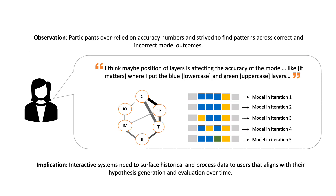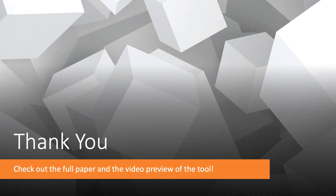Our observations also showed that participants over-relied on accuracy numbers and struggled to find patterns across correct and incorrect model outcomes. Participants' comments demonstrate that they often rebuilt models to retrieve information across transfers. For designers of interactive systems, it is crucial to surface historical and process data that aligns with their hypotheses and evaluations. We invite you to check out the full paper.